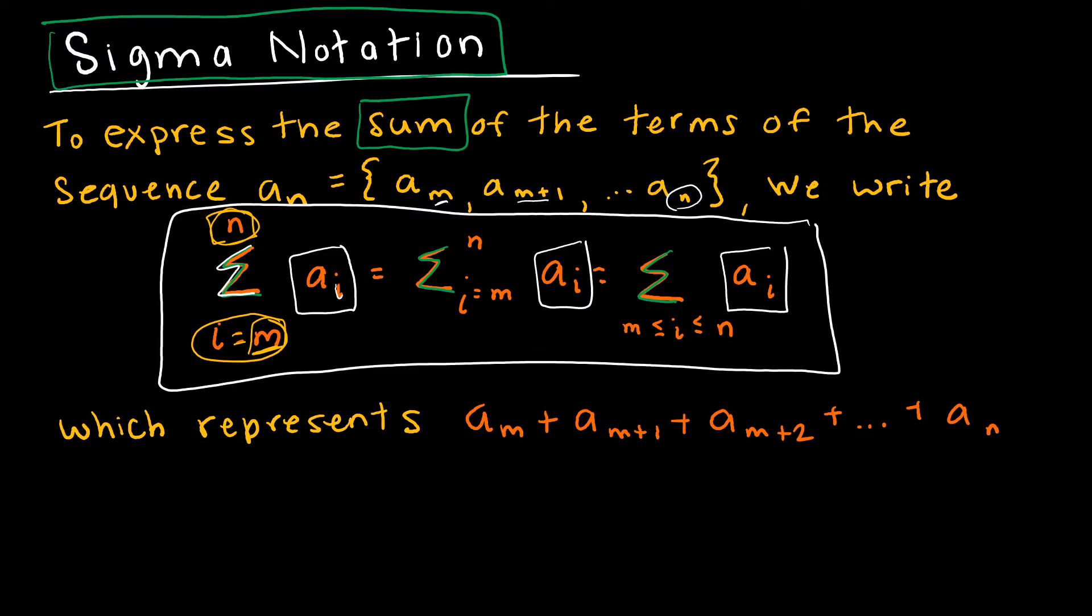Now the way that I have it written in all three ways means the exact same thing. So here notice you'll have one below and above. Here you'll have the same i equals m, that's the lower limit, up to n, but instead of above and below it's sort of to the right of. And the last way is written all below, so m is less than or equal to i is less than or equal to n.